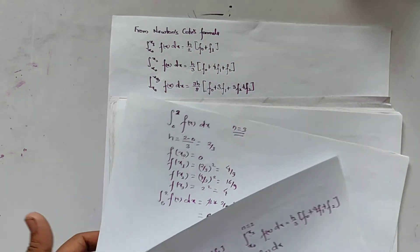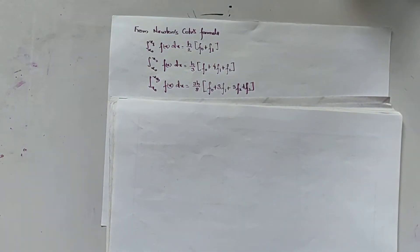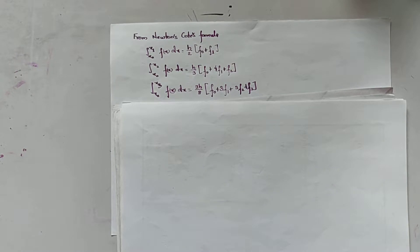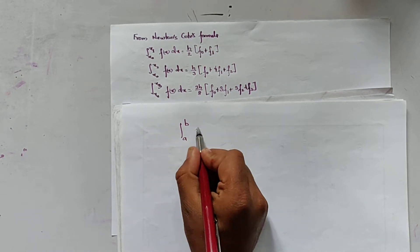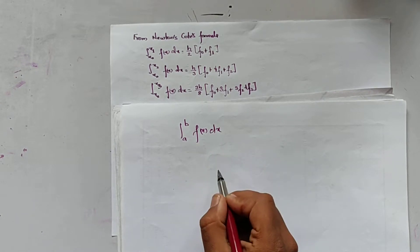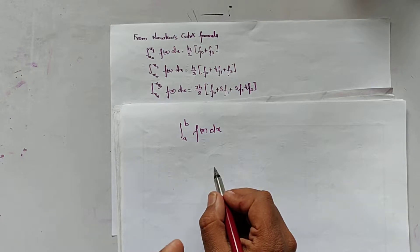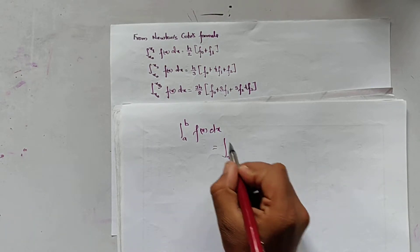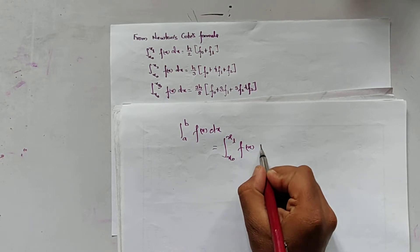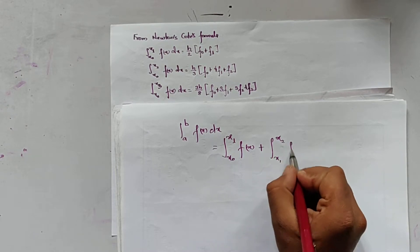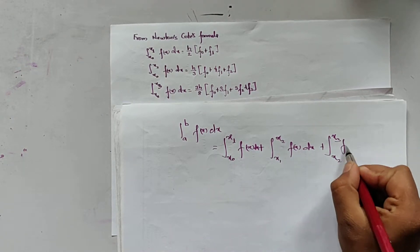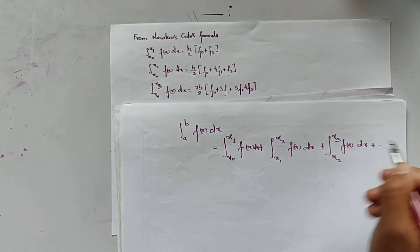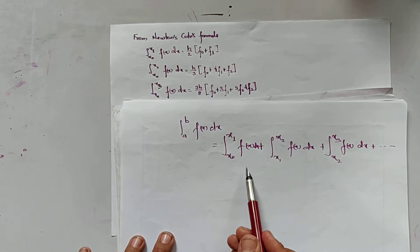Now let us find the formula for the trapezoidal rule. These are the 3 Newton-Cotes formulas. We can write the integral from a to b of f(x) dx. We divide the interval [a, b] into such sections that it can be expressed as the sum: integral from x0 to x1 of f(x) dx, plus x1 to x2 of f(x) dx, plus x2 to x3 of f(x) dx, plus dot dot dot. We can do that because integration follows the law of summation.